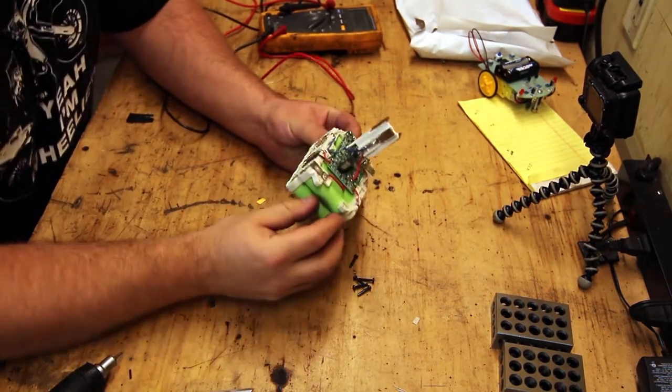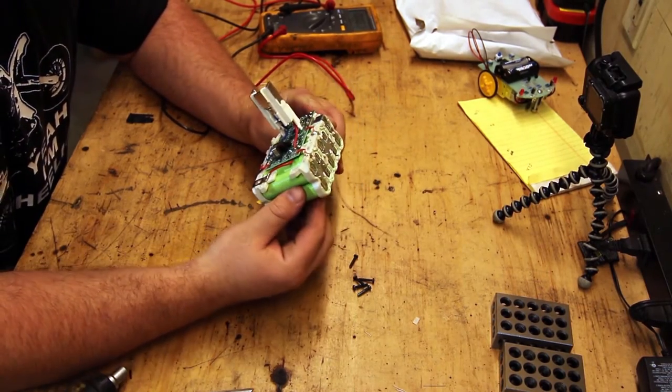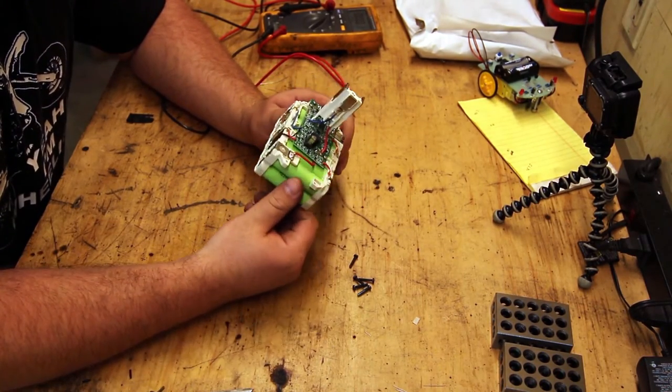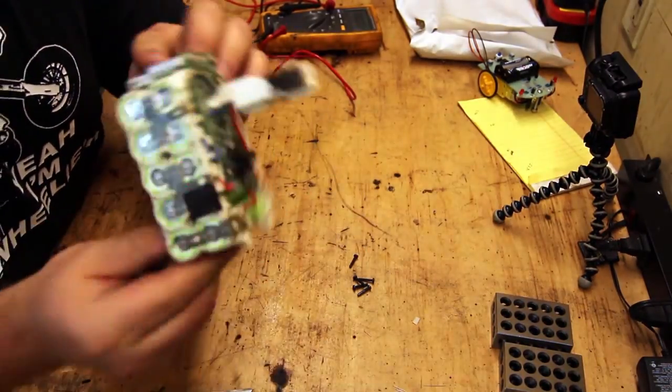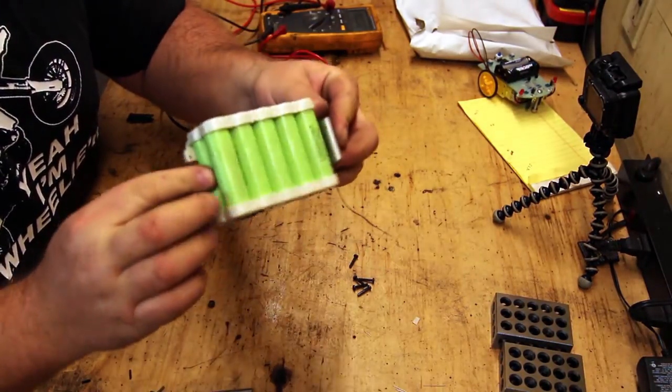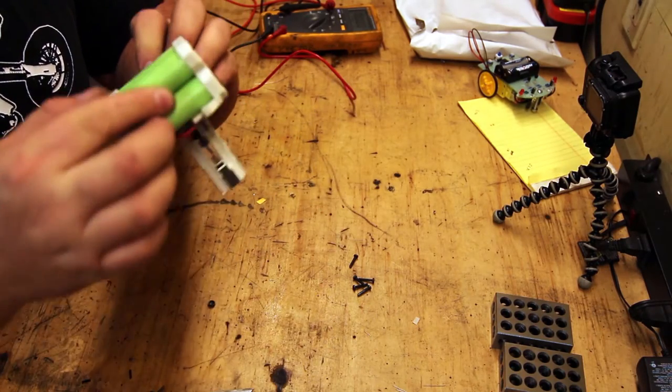So there we go. Basically the plastic shell just comes off with five screws, one of them was hidden. But here's kind of what you end up with. This is a pack of lithium-ion cells.